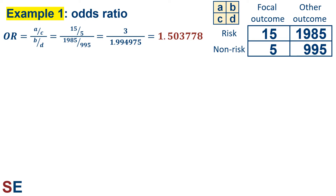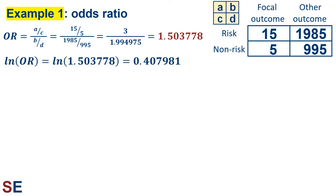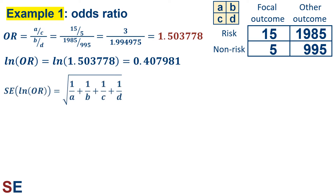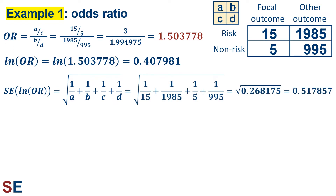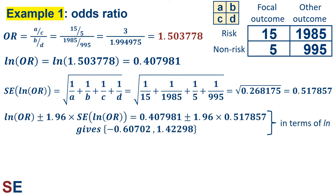This is very similar to the relative risk but slightly larger. We need to calculate confidence intervals, which also uses natural logs and exponentiation. First we take the natural log of the odds ratio, which gives us 0.407981. Then we use this equation to calculate the standard error of the natural log of the odds ratio. Plugging in the values gives us the square root of 0.268175, which is 0.517857. Adding and subtracting 1.96 standard errors gives us 0.407981 plus or minus 1.96 times 0.517857, for an interval of negative 0.60702 to 1.42298.